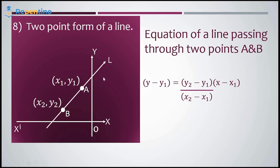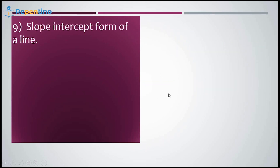Two-point form of a line: there is a line L passing through two points A and B with coordinates (x1, y1) and (x2, y2). The equation of the line is y minus y1 equals [(y2 minus y1) / (x2 minus x1)] into (x minus x1). Note that (y2 minus y1) / (x2 minus x1) is the slope. This is the two-point form of a line.